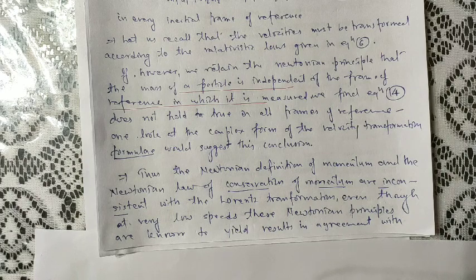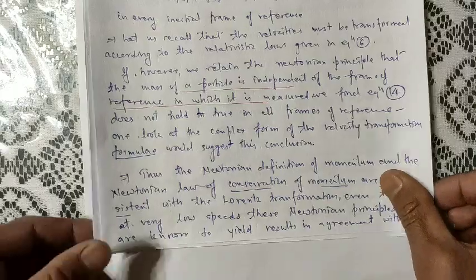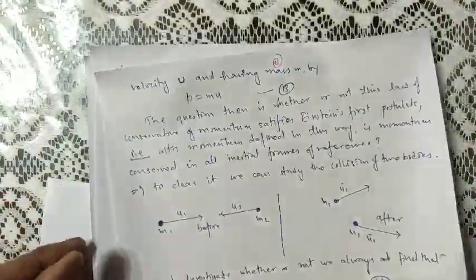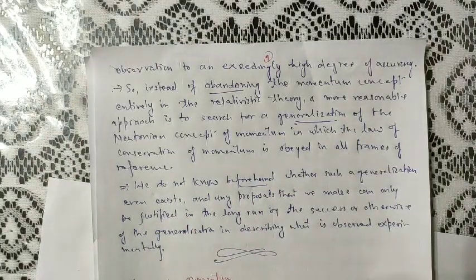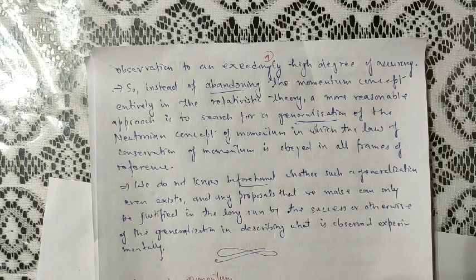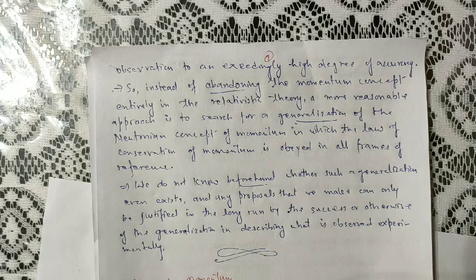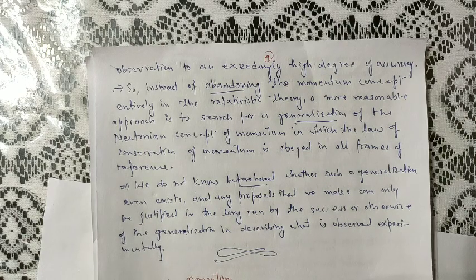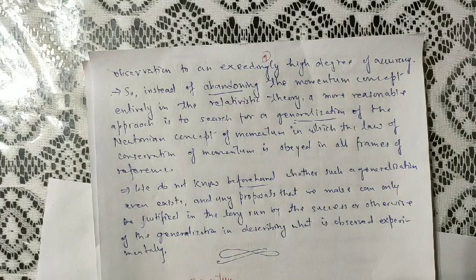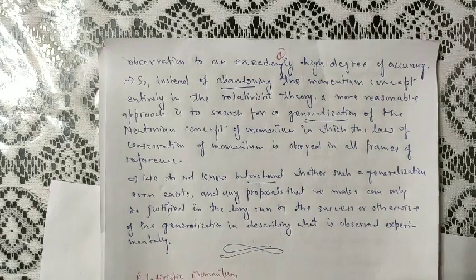Even though at very low speeds these Newtonian results agree with observation to an exceedingly high degree of accuracy, we need to look at whether the concept of momentum must be entirely different in a relativistic theory. We need a reasonable approach to generalize the concept of Newtonian momentum such that the law of conservation of momentum is obeyed in all frames of reference. Any proposal can only be justified by its success in describing what is observed experimentally. Now let us discuss relativistic momentum.